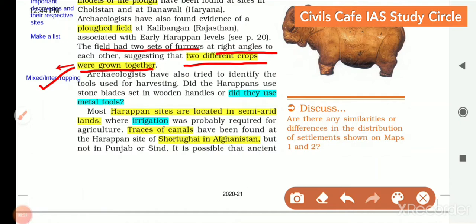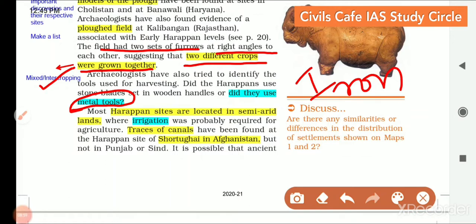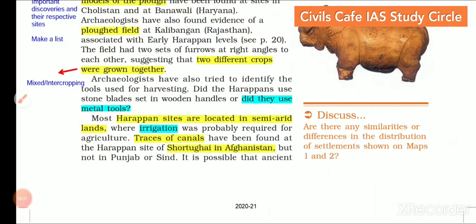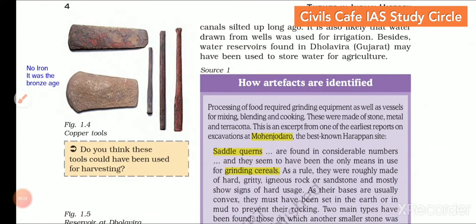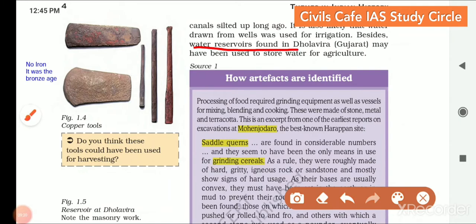The Harappans were an evolved culture who aimed for maximum agricultural productivity. Even though it was the Bronze Age — bronze being made from copper and tin — iron was not in use then; iron emerged later during the Gangetic Valley expansion. Most Harappan sites are located in semi-arid land requiring irrigation. Traces of canals have been found at the Harappan site of Shortugai in modern-day Afghanistan. Water drawn from wells was also used, and water reservoirs found in Dholavira may have been used to store water for agriculture.